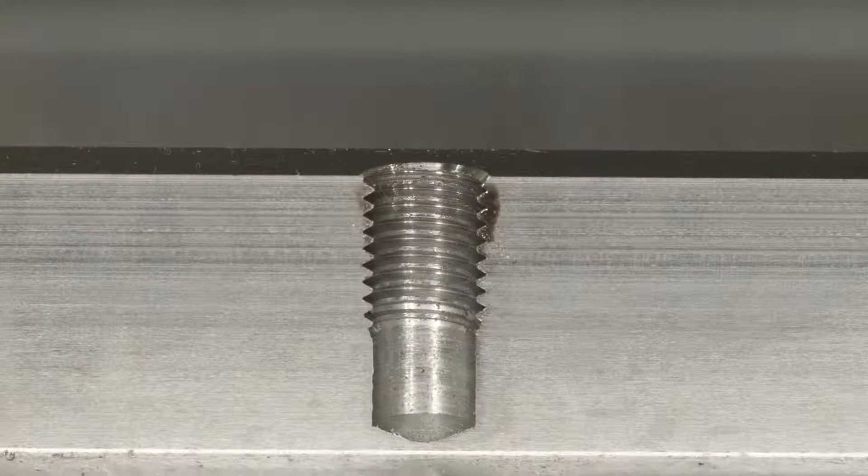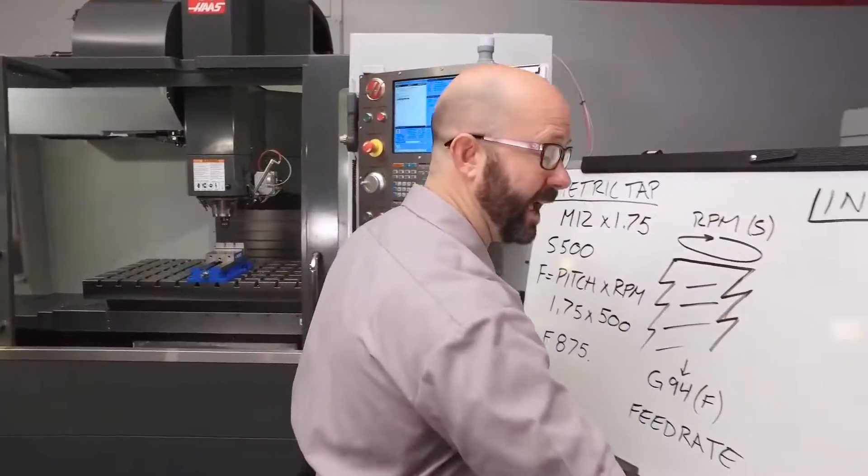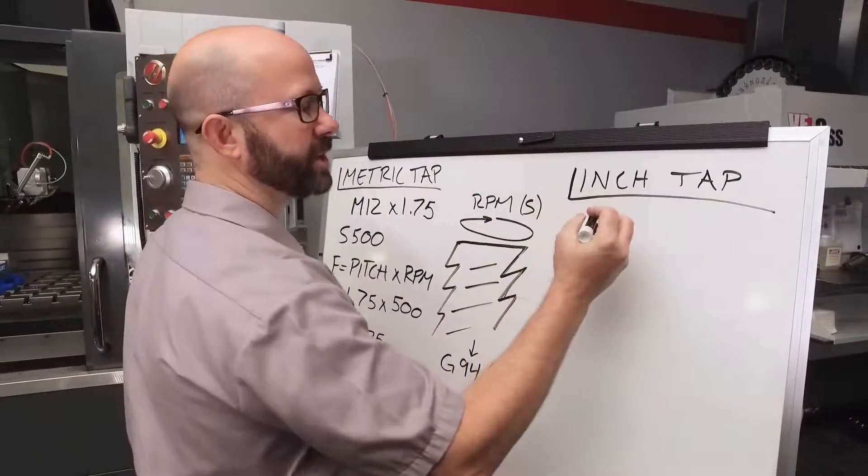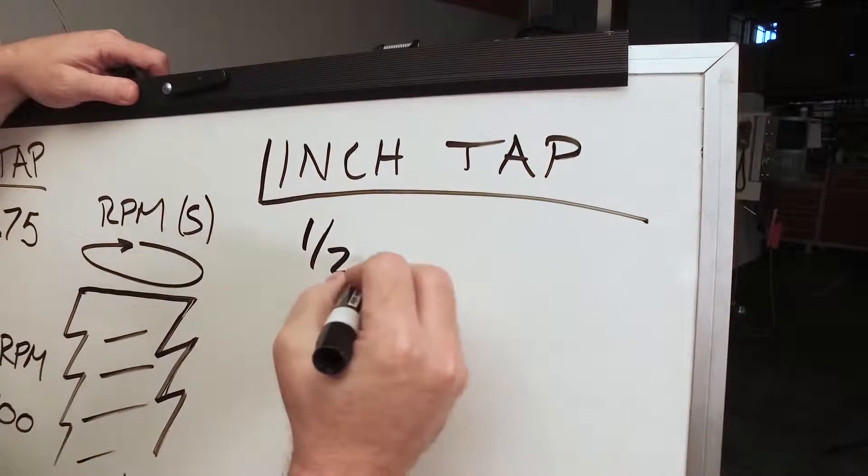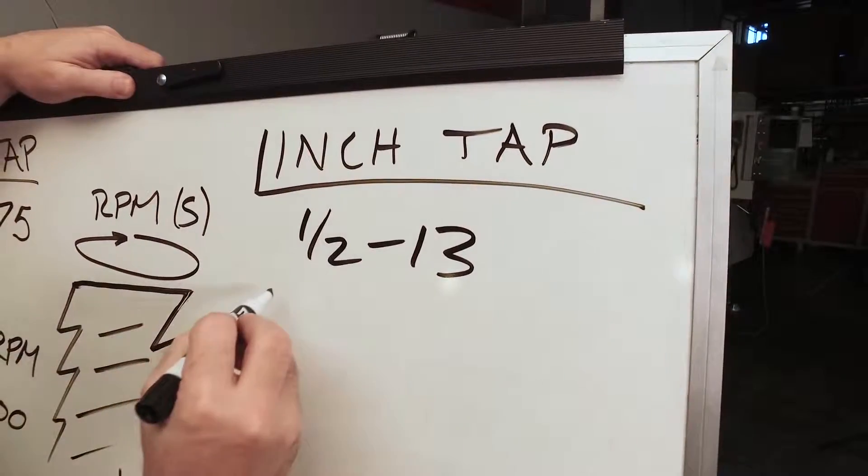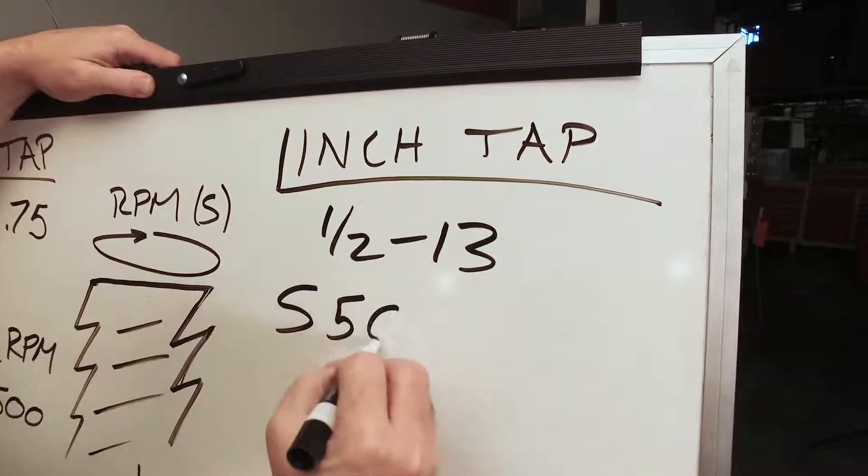Well, we've done it. We've programmed our metric tap. Now we're going to program our inch tap. For this example, we're going to use a 1/2-13. Now for this tap, we're going to use that same 500 RPM value.